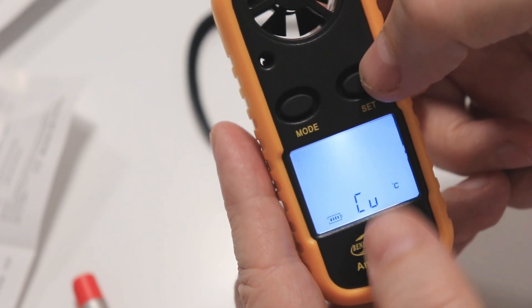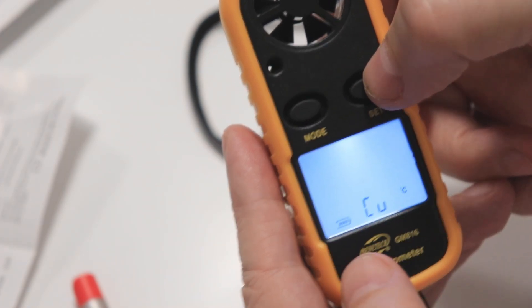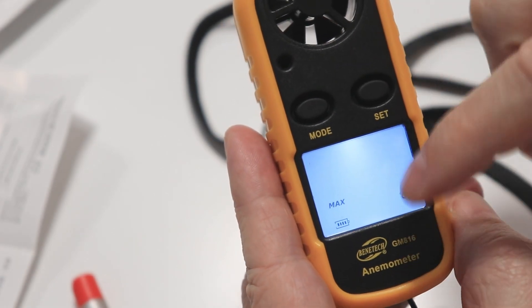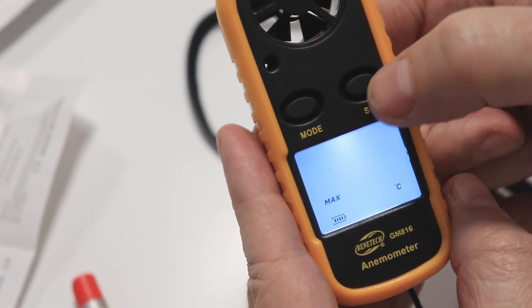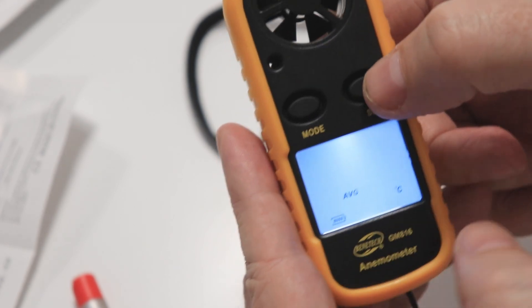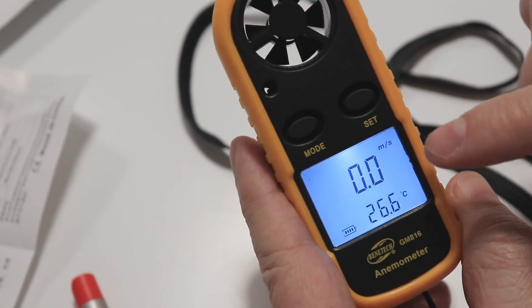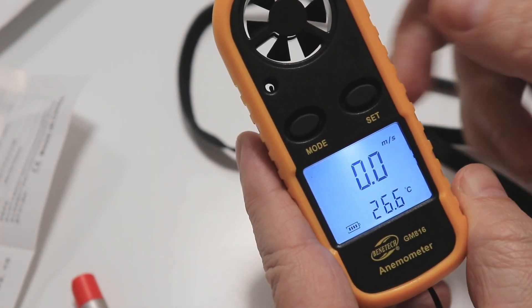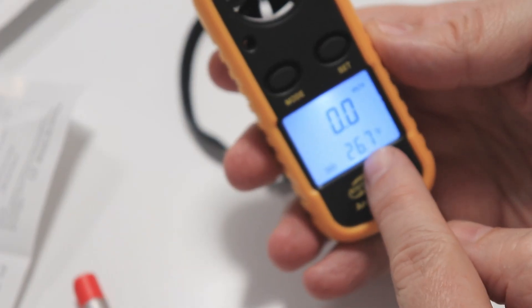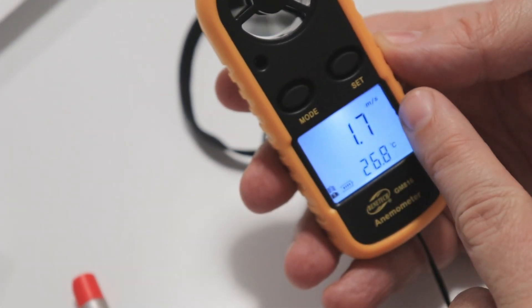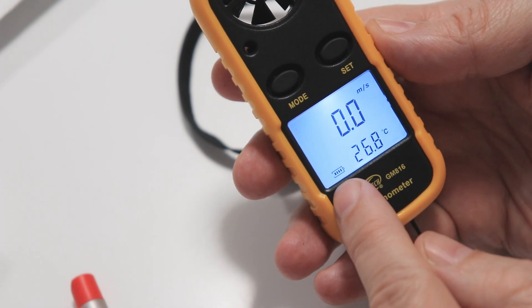And then I can set the units to display the current wind speed, or the maximum—so let's say we put it somewhere and we want to record the maximum—or the average. I will have it on meter per second on the current speed. So here we have the temperature and this is the speed in meters per second. And this is the battery indicator.